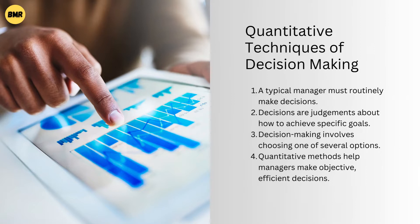A typical manager must routinely make decisions. These decisions depend on his work, authority, and powers. Decisions are judgments about how to achieve specific goals. Every task is built on decisions. For each task, a manager must choose from several options. Because every decision has consequences, choosing the right one is crucial. Managers have several decision-making methods, and quantitative methods help managers make efficient decisions.